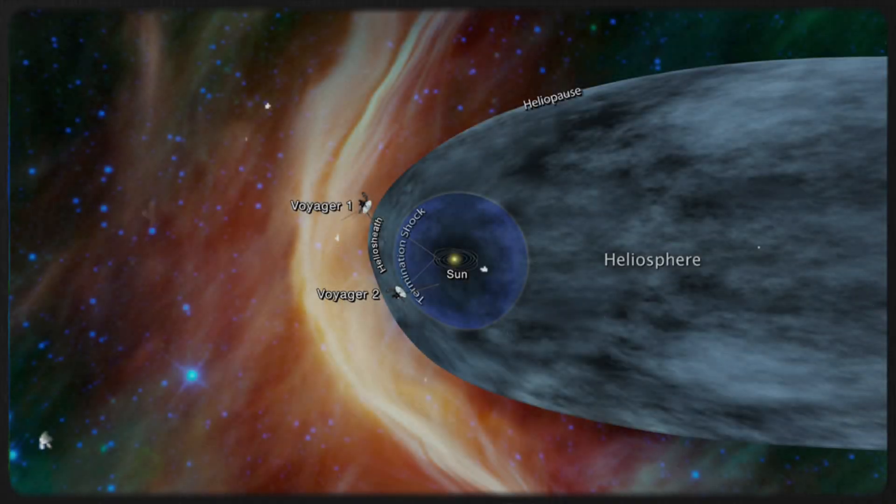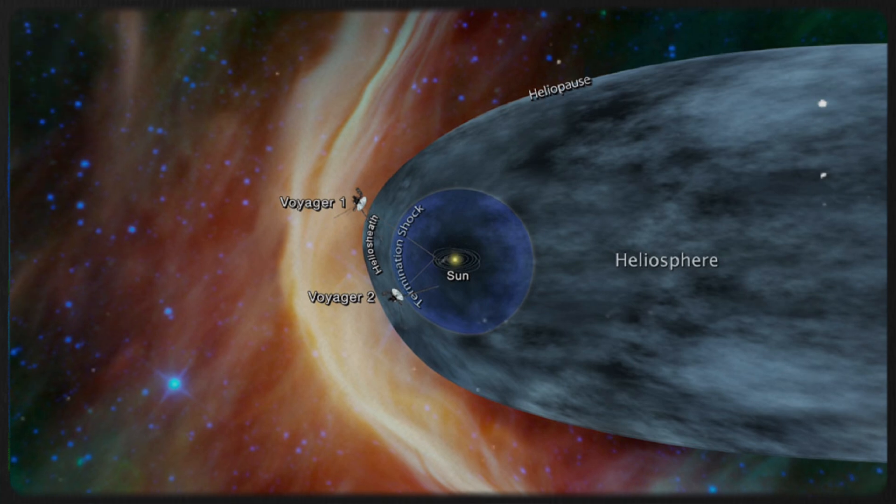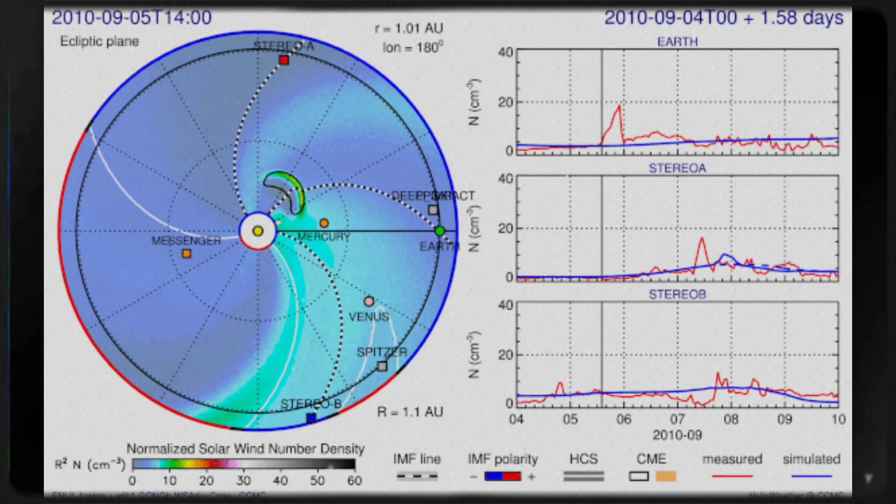Gurnett's projections proved accurate, as it took nearly 20 years for one of the Voyagers to reach the heliopause. Voyager 1 detected the expected rise in plasma density with its plasma wave detector, showing an 80-fold increase.